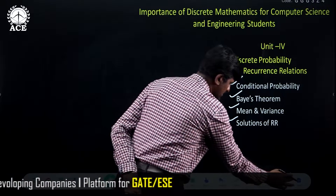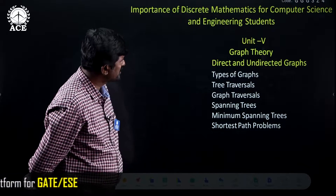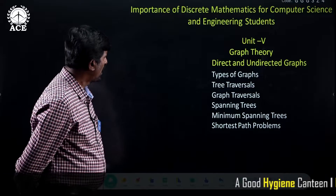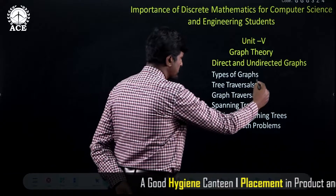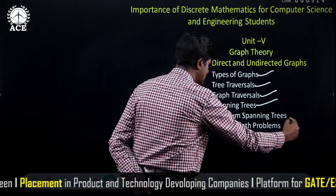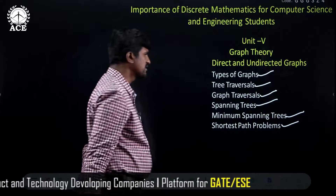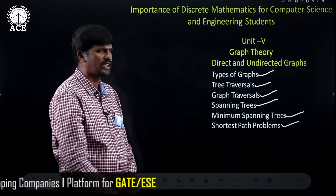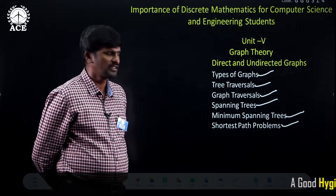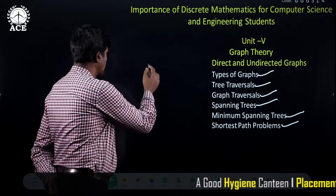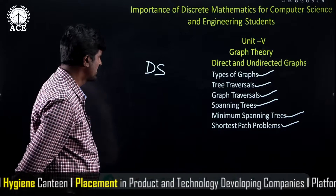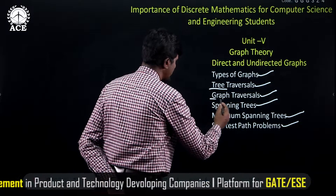The next unit is graph theory. Under graph theory, the student studies directed graphs and undirected graphs, and the types of graphs. This unit is very important for computer science engineering students and allied branches because there are many applications of graph theory. Graph theory is used in the subject data structures, where trees and graphs come under non-linear data structures.